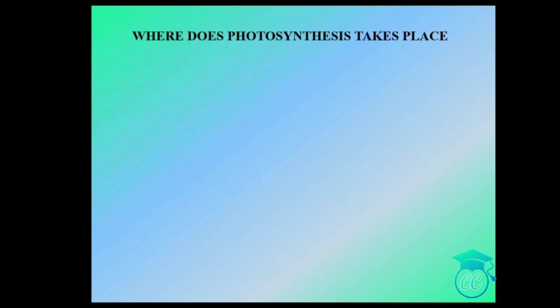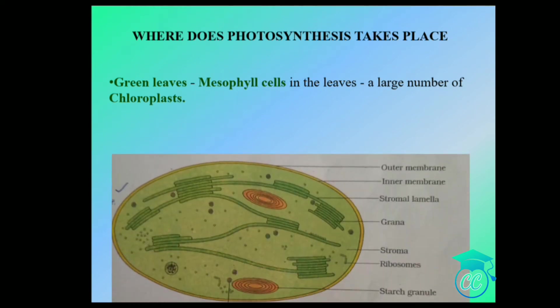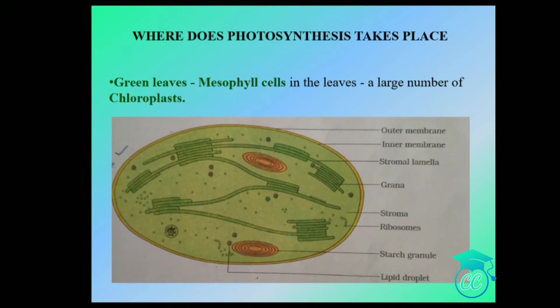Where does photosynthesis take place? Photosynthesis takes place in green leaves. In green leaves there are mesophyll cells, and a large number of chloroplasts align along the wall of mesophyll cells in order to get the optimum quantity of incident light. The chloroplast is a double-layered membrane which consists of stroma lamella, grana, and stroma.